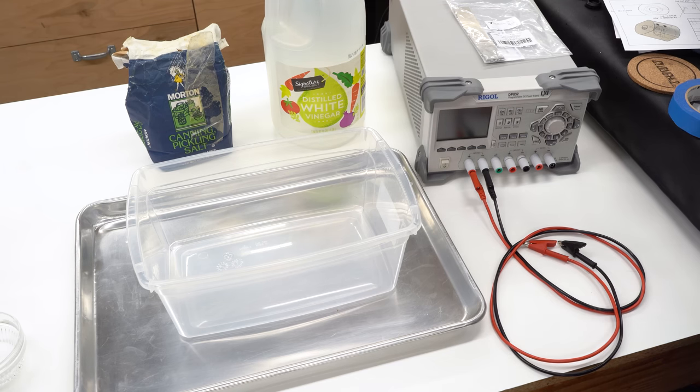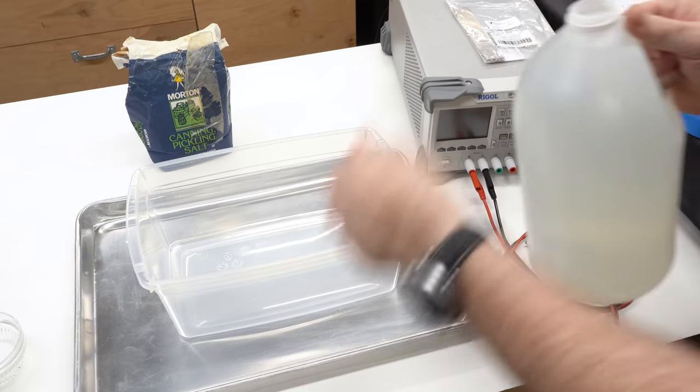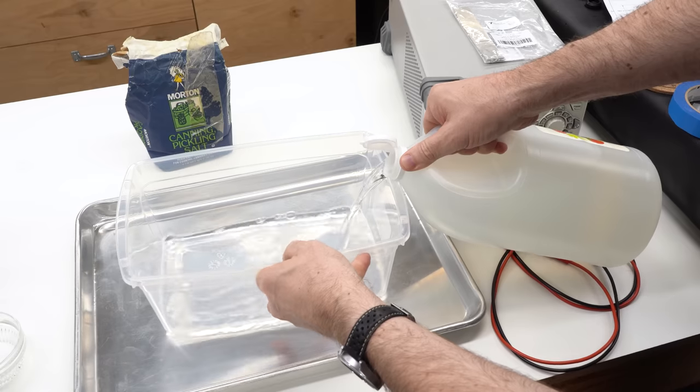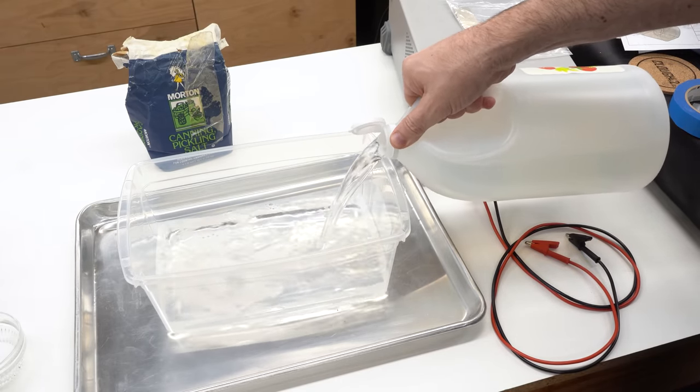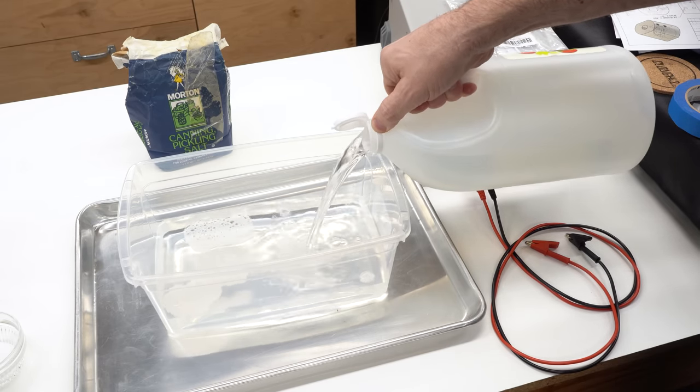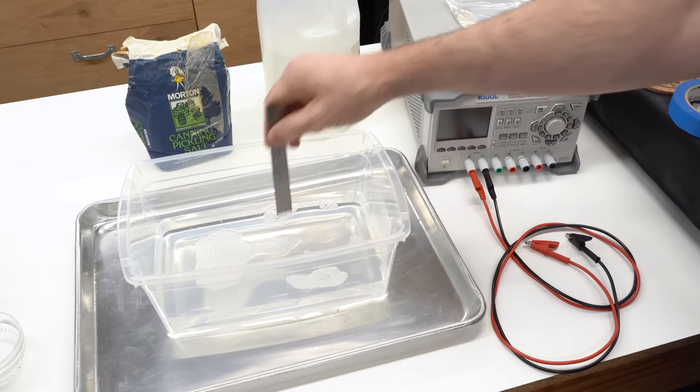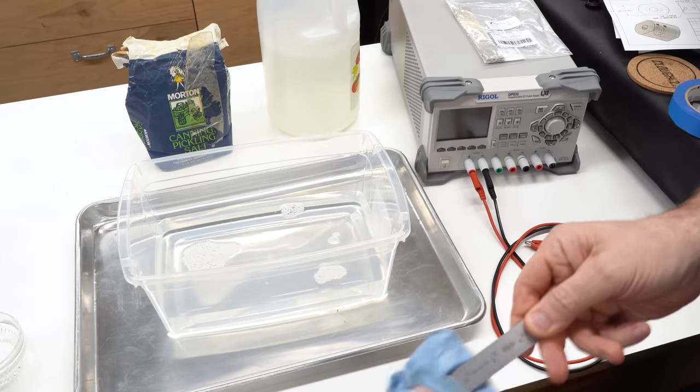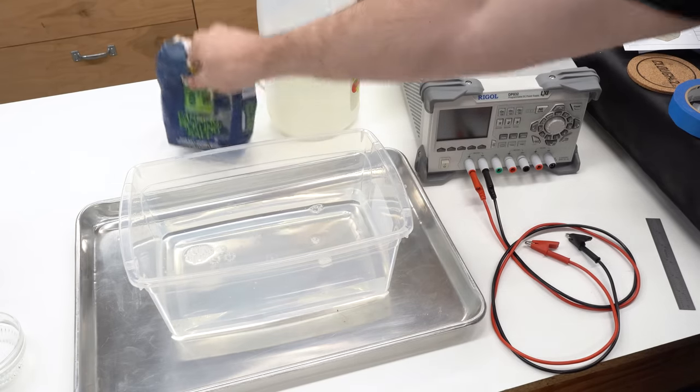To actually do the electroplating, we are going to need to make up a solution of nickel acetate, and we're just going to start with some distilled white vinegar as a source of acetic acid. I've just got a plastic tub here that's about the right size to hold the parts I need. I need about an inch of depth, or a little more than an inch of depth, because the largest part of the part is an inch in diameter, so I'm going to pour in a couple of quarts here.